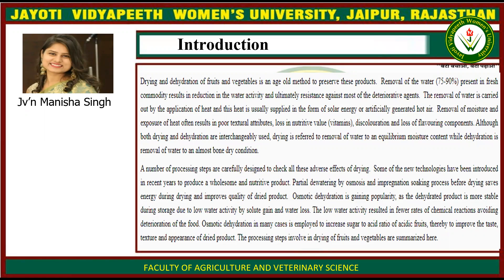First, a small introduction to drying and dehydration. Drying and dehydration of fruits and vegetables is an age-old method to preserve these foods. Removal of water — 75-90% present in fresh commodity — results in reduction in the water activity and ultimately resistance against most of the deteriorative agents. The removal of water is carried out by the application of heat, usually supplied in the form of solar energy or artificially generated hot air.